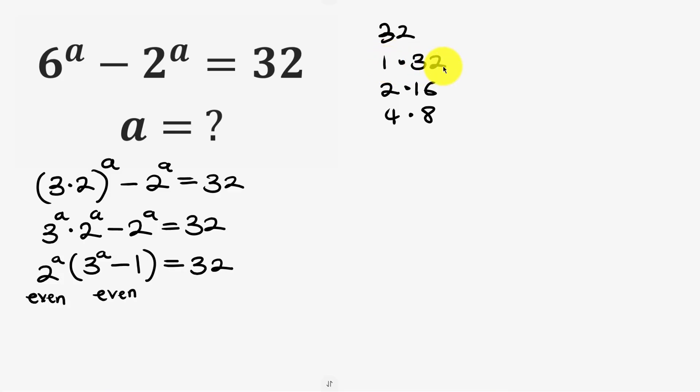Now 1 times 32, 1 is not an even factor so we're going to be rejecting this. This is even times another even factor to give 32. So we're going to call this case 1 and we'll call this case 2. Now let's solve this case by case.